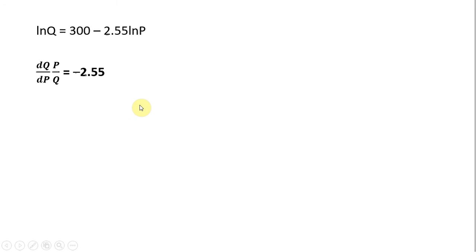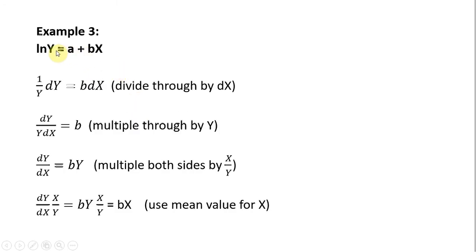Moving on to our last functional form. Example 3, a semi-log form where the dependent variable is in natural logs, but that's it. So once again, let's take the total differential of this equation. So 1 over y times the change in y equals the derivative of bx is just b multiplied by the change in x.